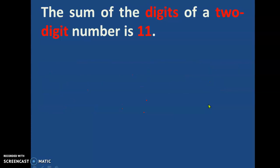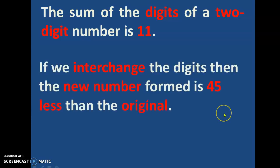The sum of the digits of a two-digit number is 11. The number has only two digits and the sum of the digits is 11. Now, if we interchange the digits, then the new number formed is 45 less than the original.